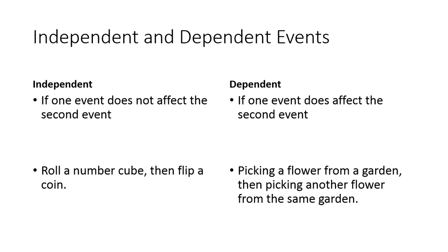A dependent event is one where the first one affects the second one. For example, if you go into a garden with 10 flowers — five sunflowers and five roses — and pick one at random, it's 50-50. If you pick a rose, next time there are only four roses and nine total, so the probability of picking another rose is now 4 over 9, or 44%. The first event changed the odds of the second one.